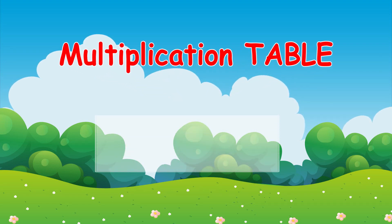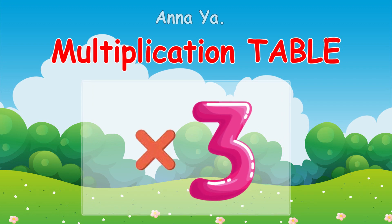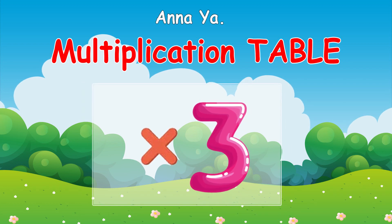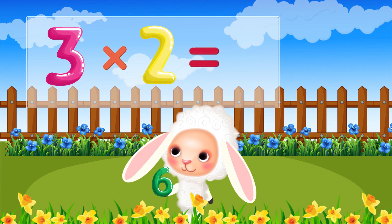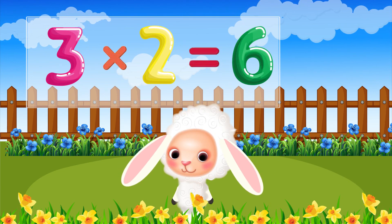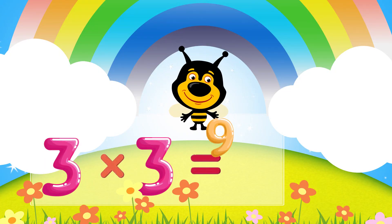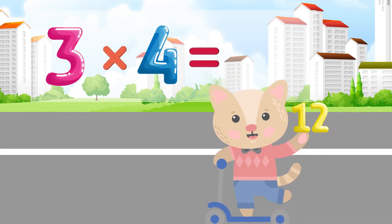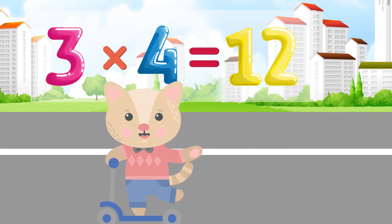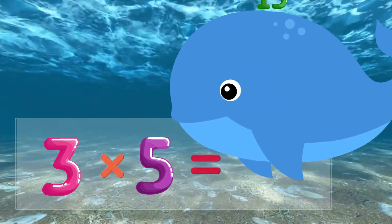Three times table. Three times two is six. Three times three is nine. Three times four is twelve. Three times five is fifteen.